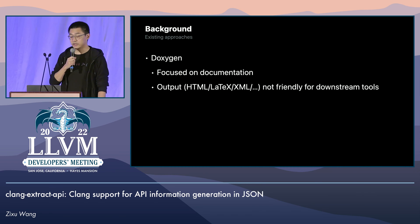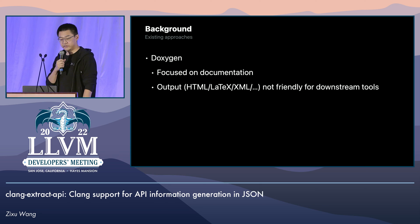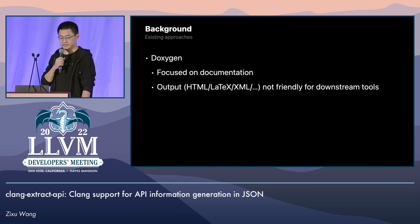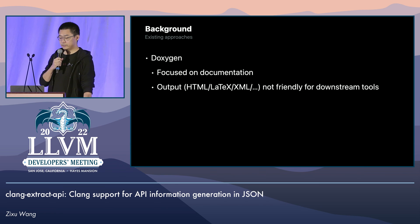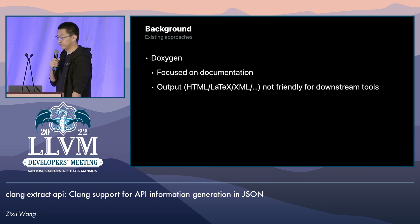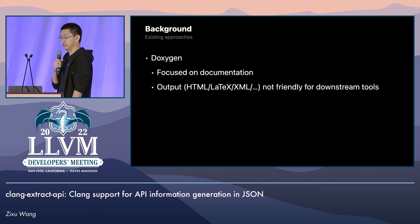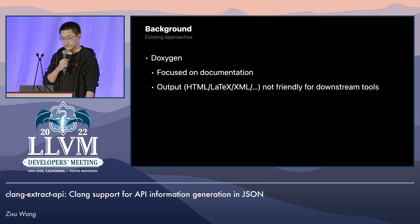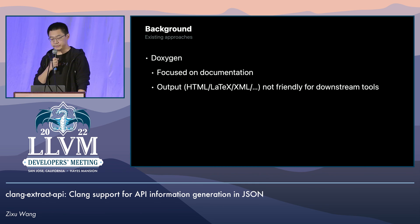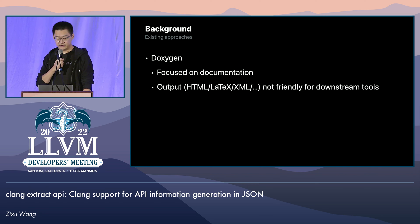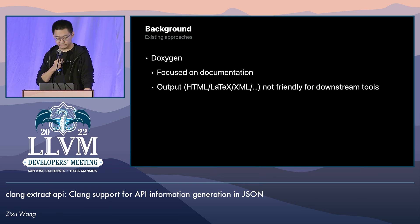There's also Doxygen and other documentation-oriented tools. The problem with these tools is that they are not super flexible to extend for other uses of the API information other than documentation, and the output formats are also typically not super flexible and friendly for additional tooling.